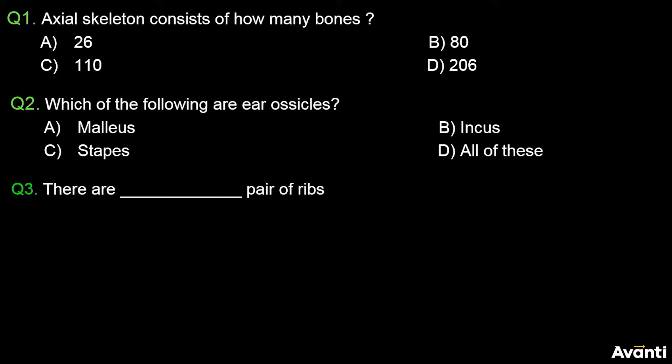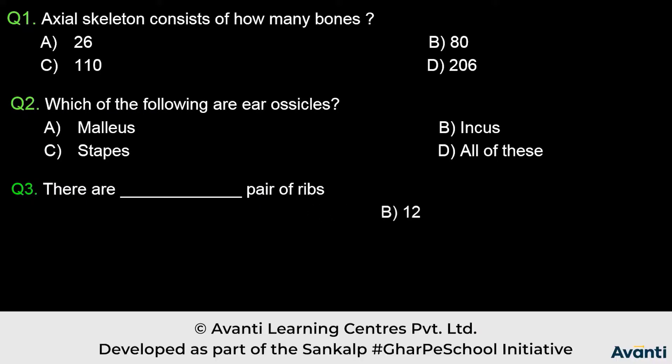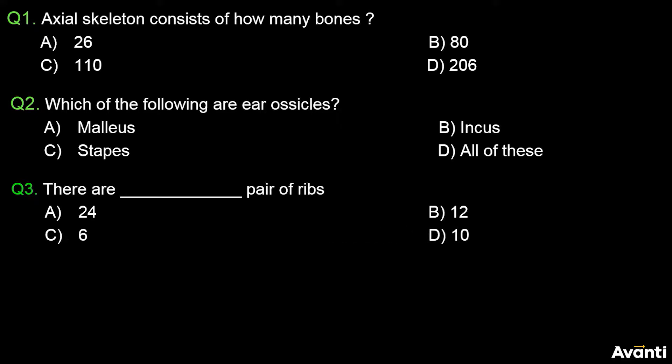Question number 3: There are how many pairs of ribs? Option A: 24, Option B: 12, Option C: 6, Option D: 10.